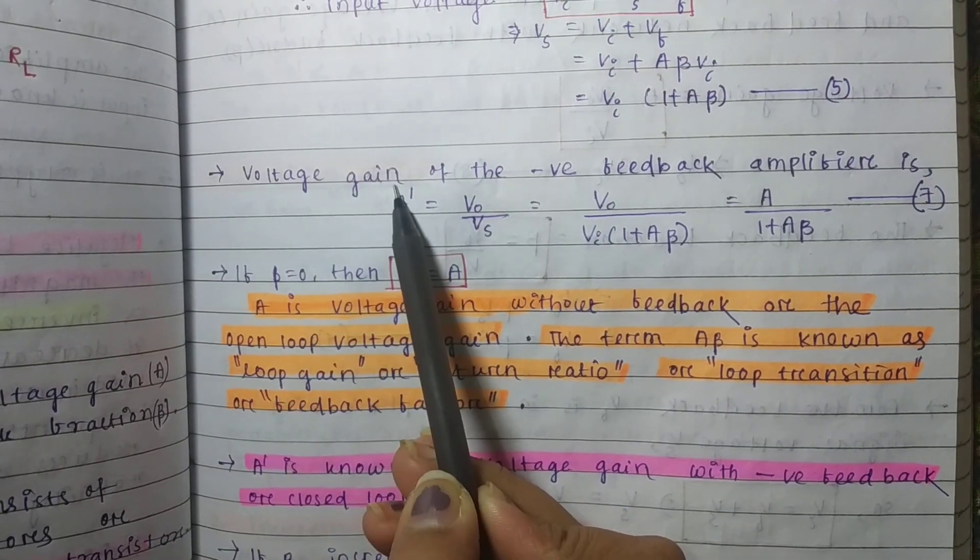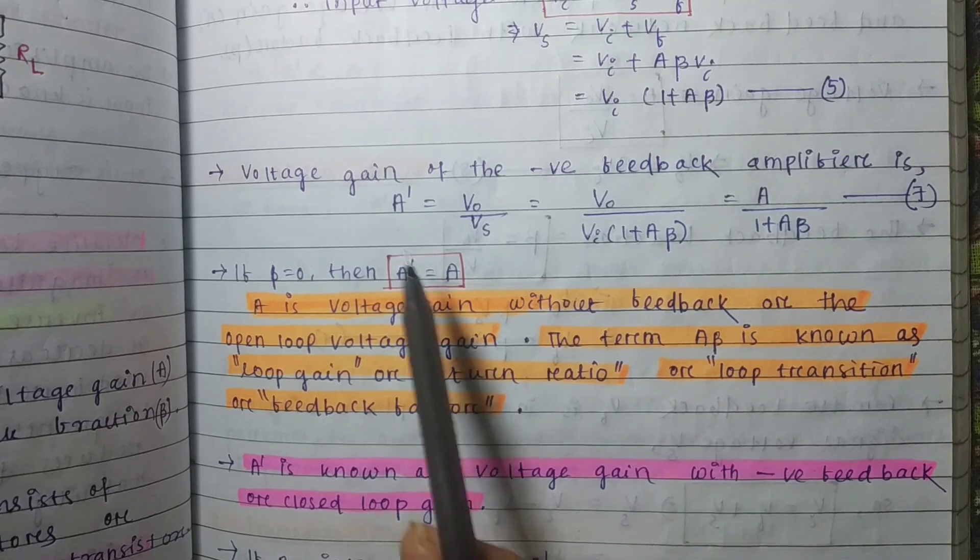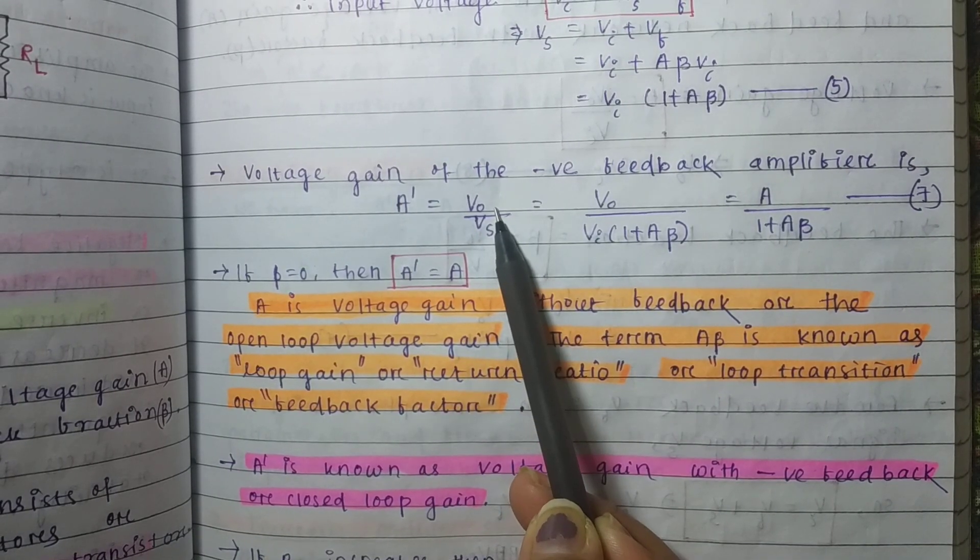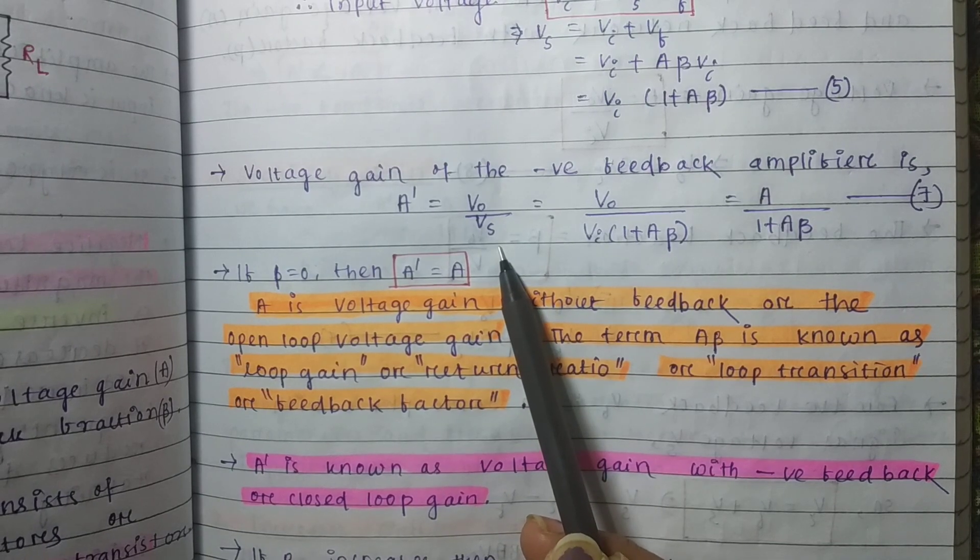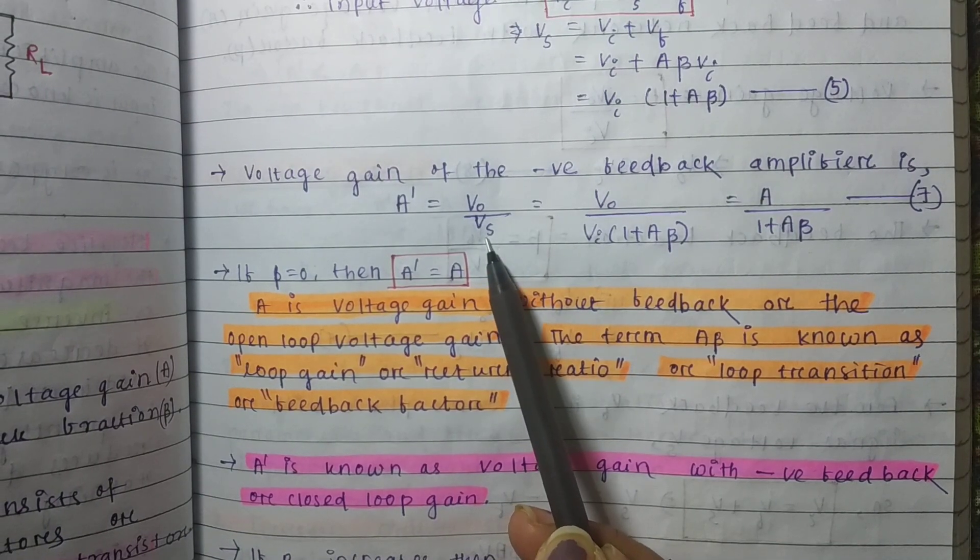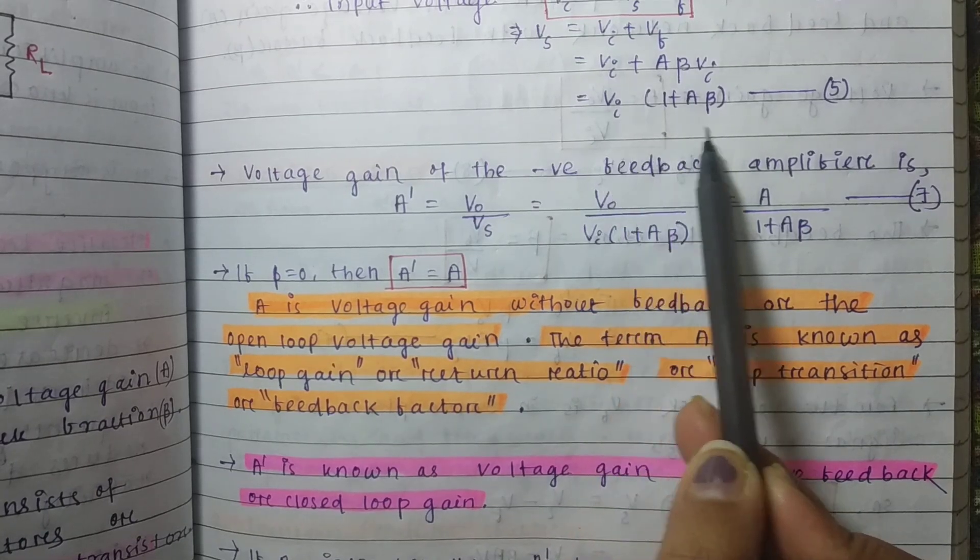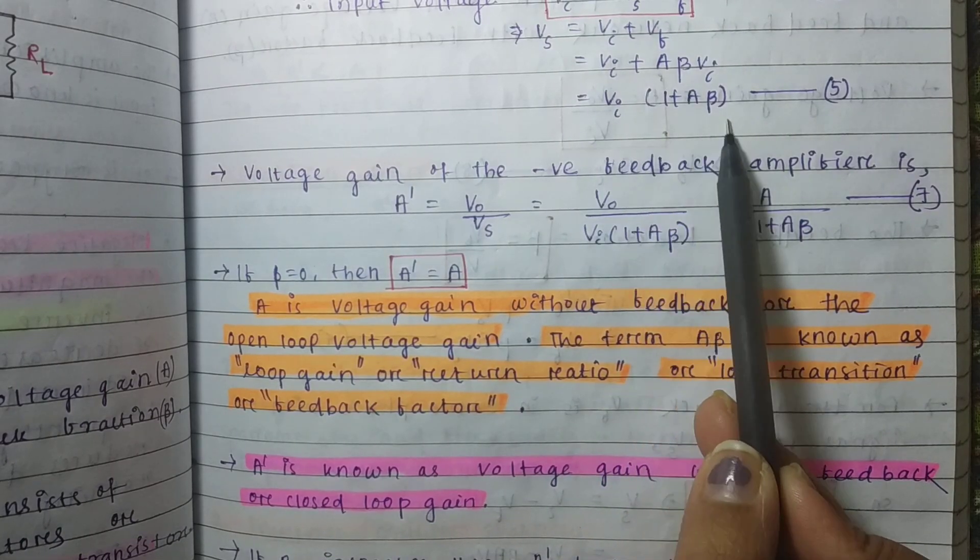Next, voltage gain of the negative feedback amplifier is denoted as A prime. Then Vo by Vs, where Vs is the source voltage. Vo by Vs, the value of Vs is Vi into 1 plus A beta.